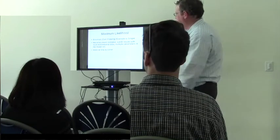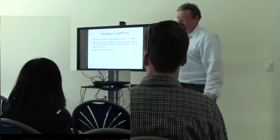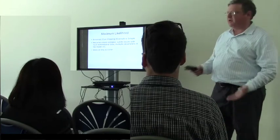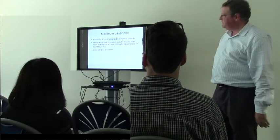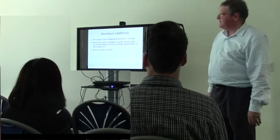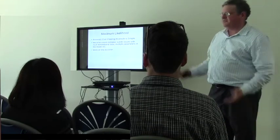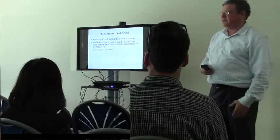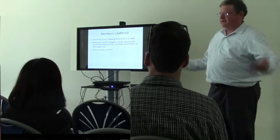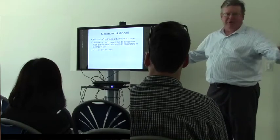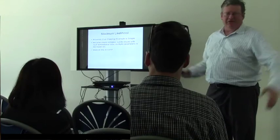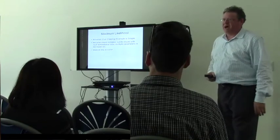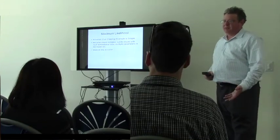For simple cases, maximum likelihood works very well today. Some of what is maximum likelihood is least squares fitting, which goes back to Gauss and has its roots in Kepler, Copernicus, and literally 2,000 years of attempting to model the motions of the planets.